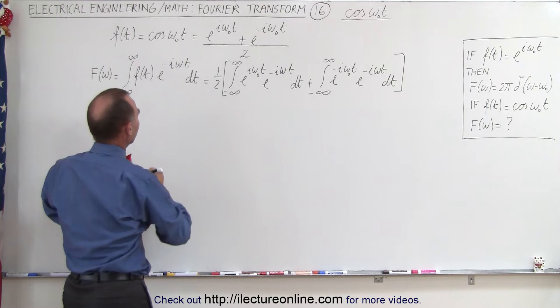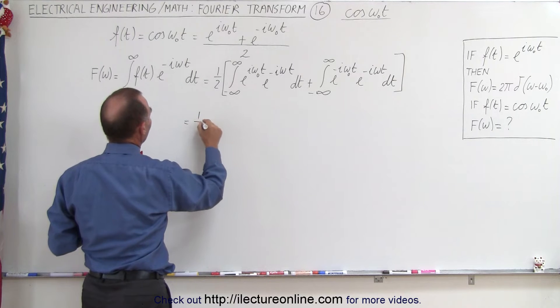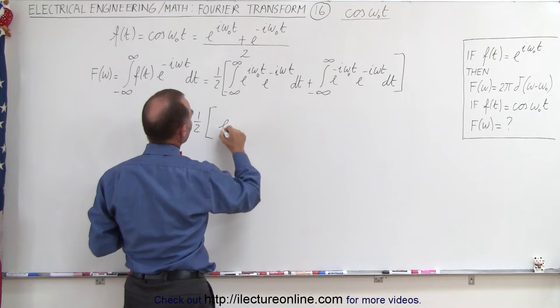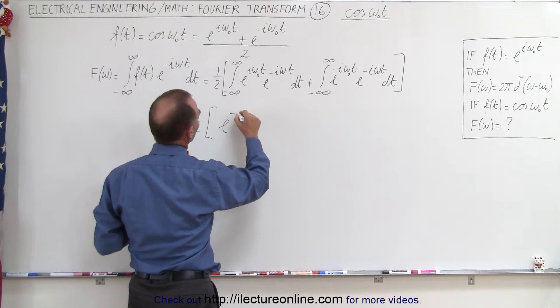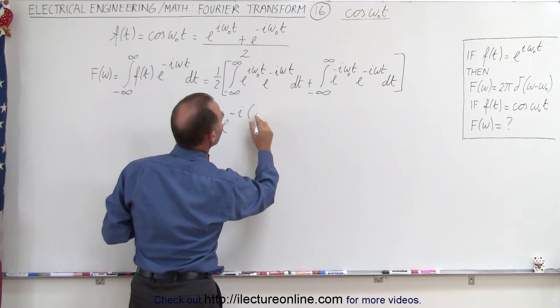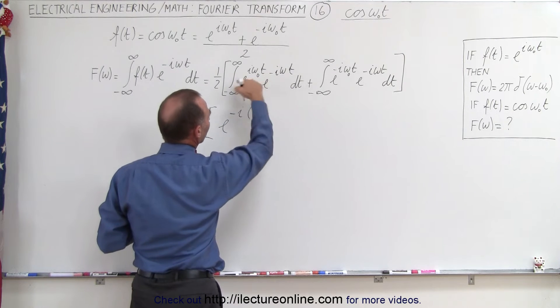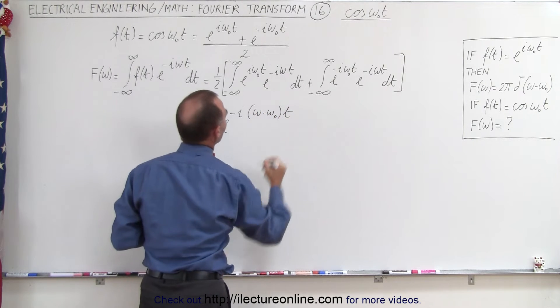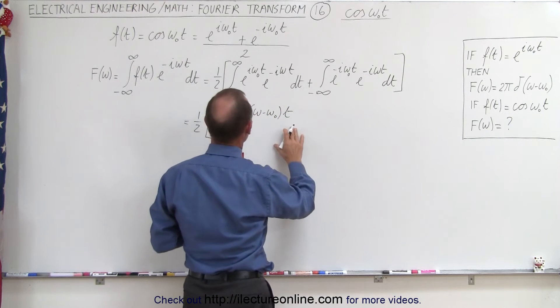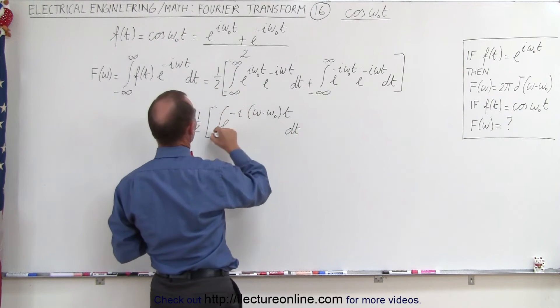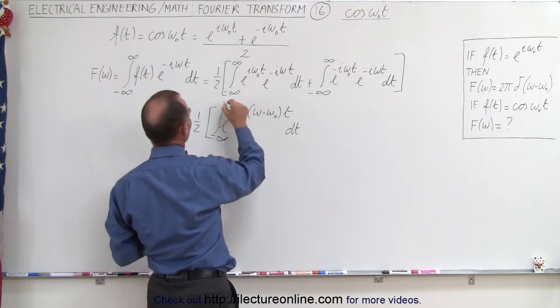This equals one-half times the first integral, which looks like e^(-i(ω - ω₀)t) dt, integrated from minus infinity to infinity.